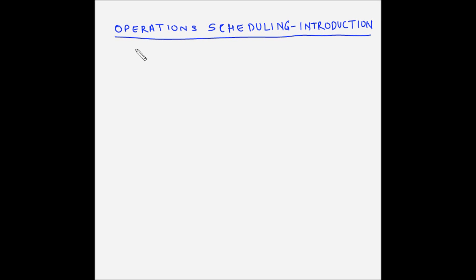Let us understand the basic concepts of operation scheduling. Operation scheduling is one of the planning functions of an operations manager. This function is one of the most important in job shop processing.